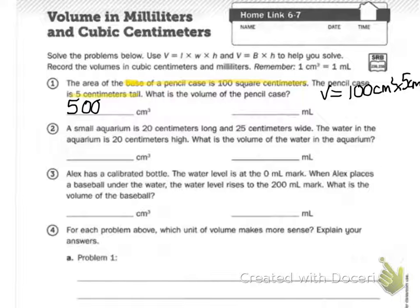It then says remember, 1 centimeter cubed equals 1 milliliter. So if I had just 5 centimeters, it would be 5 milliliters. But because I have 500 centimeters cubed, this means it's going to be 500 milliliters.